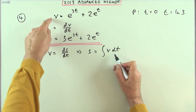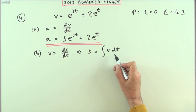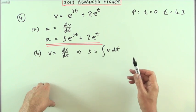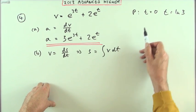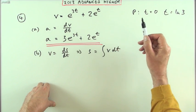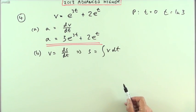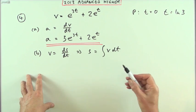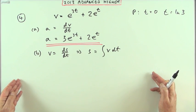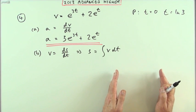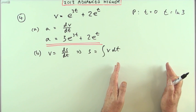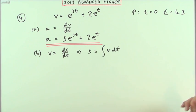Now when you integrate this, a constant's going to be introduced, which may confuse you because you don't have any initial values to put in. You don't know what the distance is when the time was 0. But strictly speaking, it doesn't matter in this question because it's not asking for an absolute distance travelled, it's asking for the distance travelled between two times. You're asking for the difference in the distance, in which case those constants would cancel each other out.